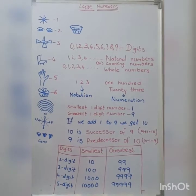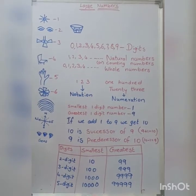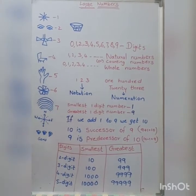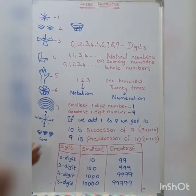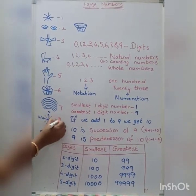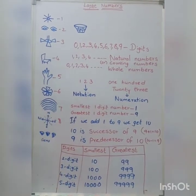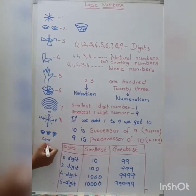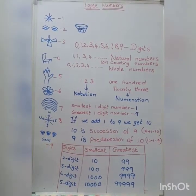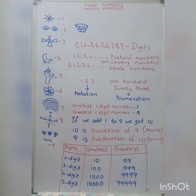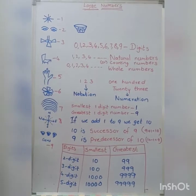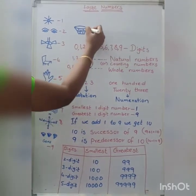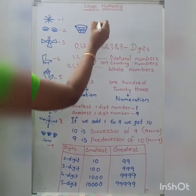How many colors in a rainbow? Seven. How many directions do we have? Eight. How many types of gems do we have? Nine. Gems means Navaratnas. How many fruits in a basket? Nothing. Nothing means zero.